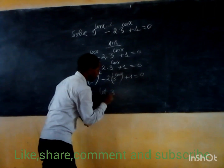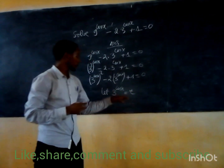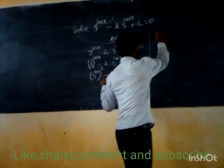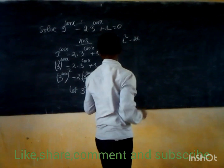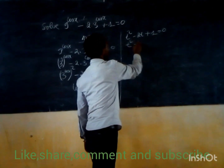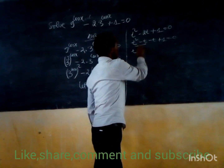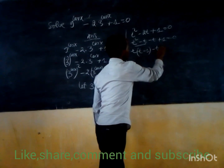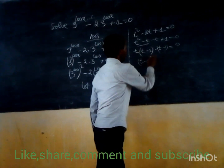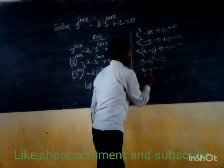Let t equal 3 to the power cosine of x. Substituting into the equation, we get t squared minus 2t plus 1 equals 0. This factors as t minus 1, times t minus 1, equals 0, so t minus 1 equals 0, giving t equals 1.